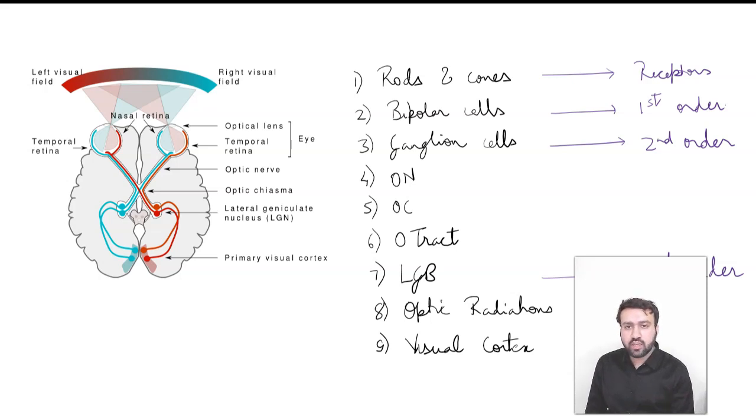So the rods and cones are the receptors. Bipolar cells are the first order neurons. Ganglion cells are the second order neuron. Up to the lateral geniculate body, you have the second order neuron. And then lateral geniculate body gives rise to the third order neuron. So from lateral geniculate body to the visual cortex that comprises the third order neuron of the visual pathway.